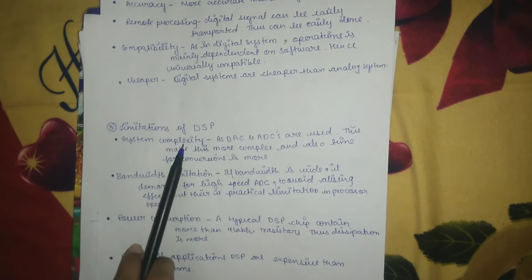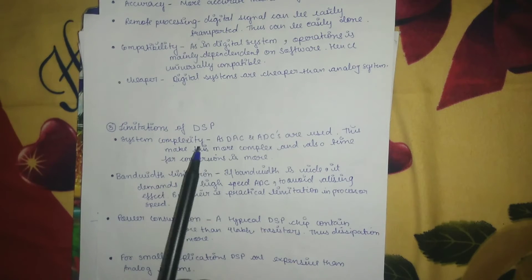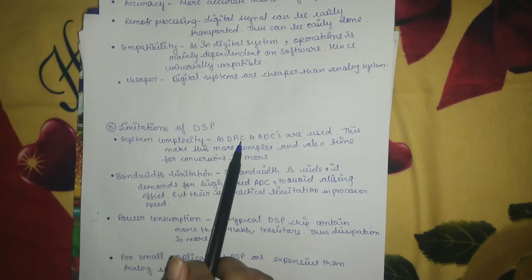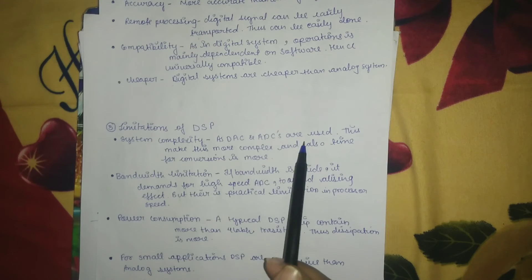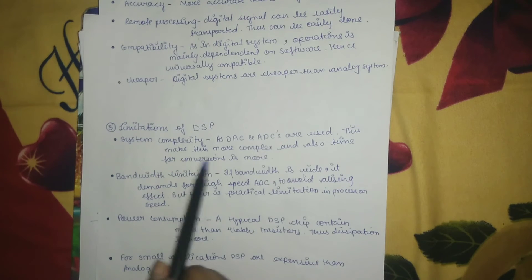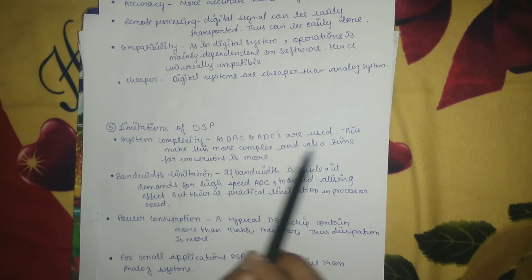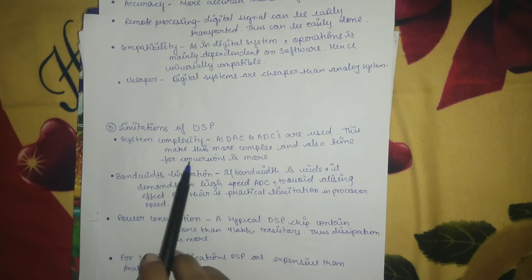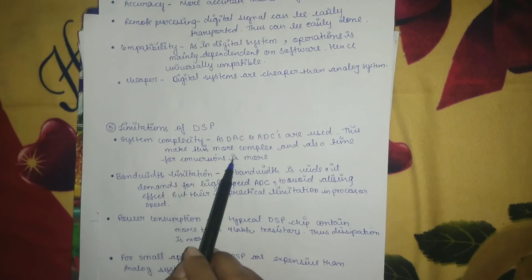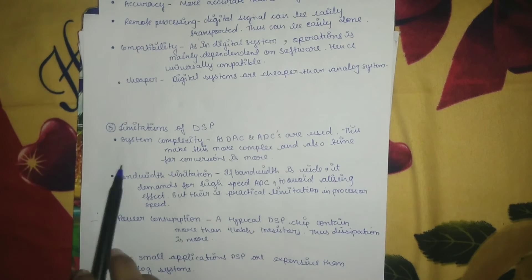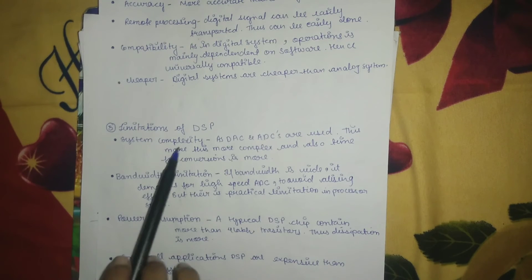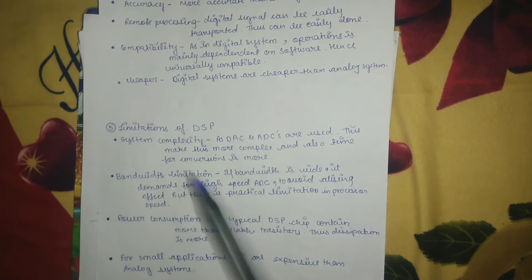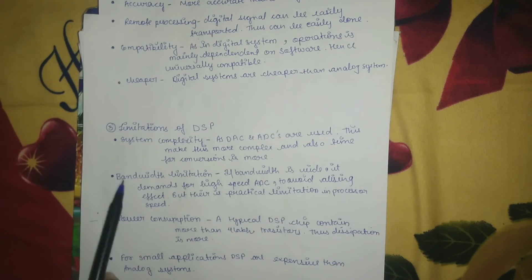Now the limitations of digital signal processing are as follows. The first is system complexity: digital-to-analog converters and analog-to-digital converters are used, which makes the system more complex. The time required for these conversions also increases, so DSP has greater system complexity.